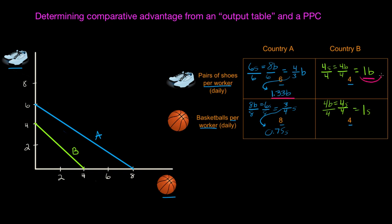Clearly, country B can produce shoes at the lower opportunity cost, so country B should specialize in shoe production since that's what it has a comparative advantage in. For basketballs, country A can produce basketballs at an opportunity cost of 0.75 pairs of shoes per basketball, whereas country B must give up one pair of shoes per basketball, giving country A the comparative advantage due to its lower opportunity cost in basketball production.